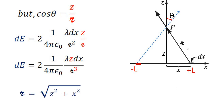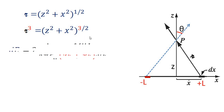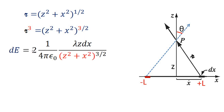From the diagram, r² = z² + x², so r = sqrt(z² + x²), and therefore r³ = (z² + x²)^(3/2).